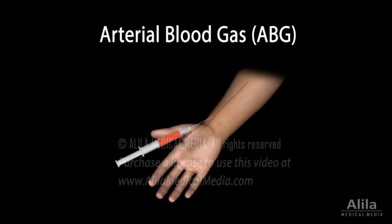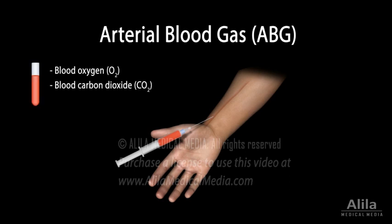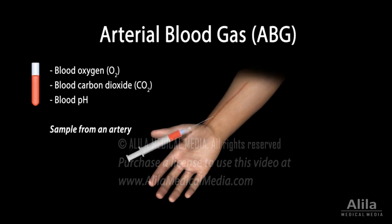Arterial blood gas, ABG, is a blood test that measures the levels of blood oxygen and carbon dioxide, as well as blood pH, in a sample drawn from an artery, most often from the radial artery or femoral artery.